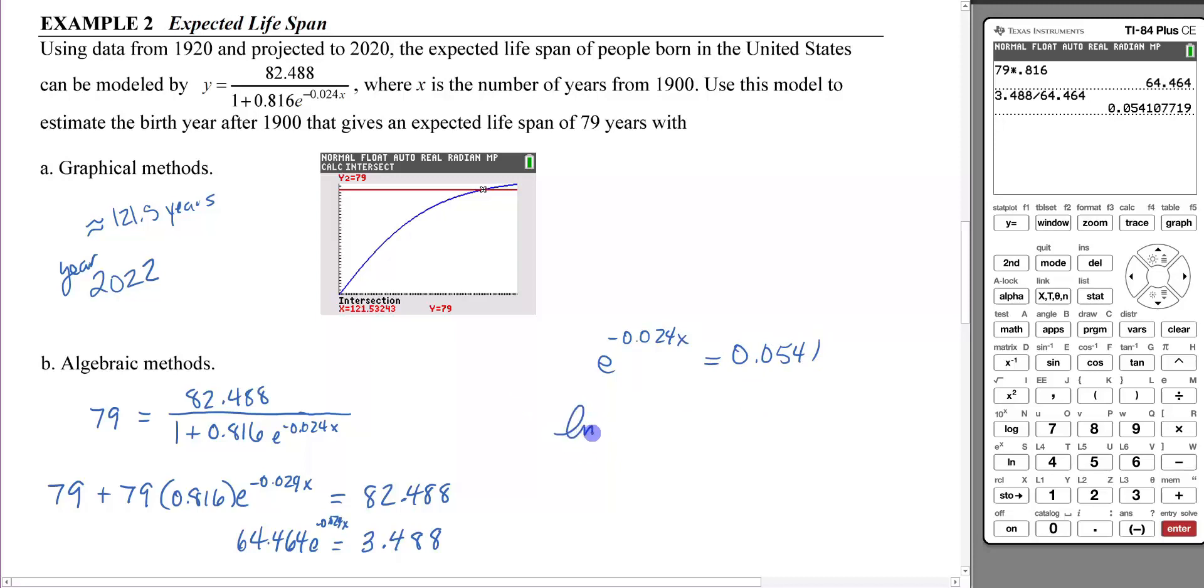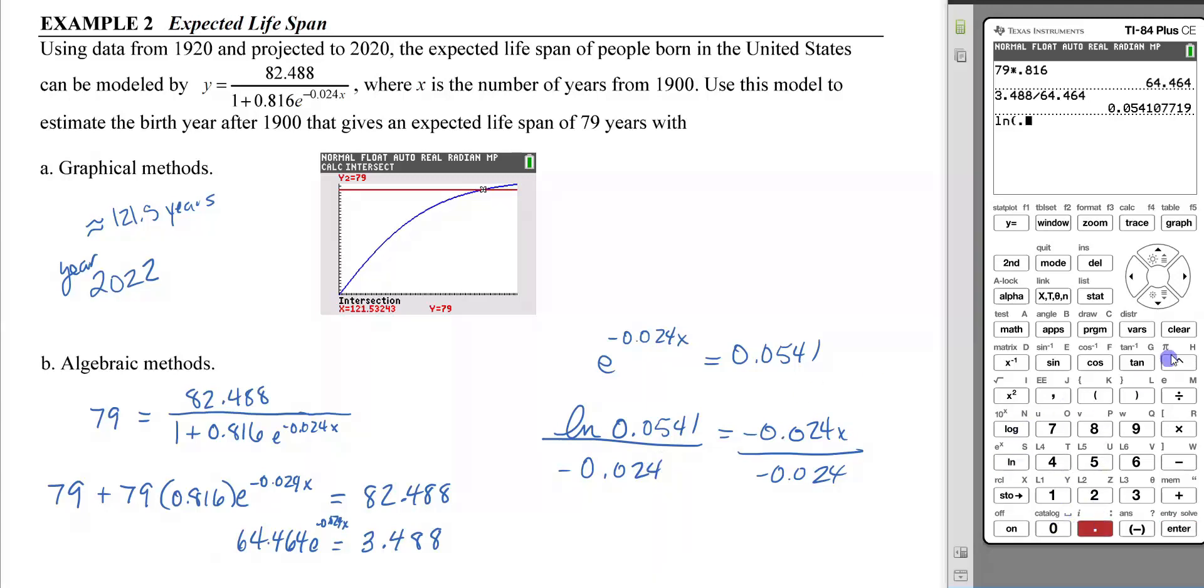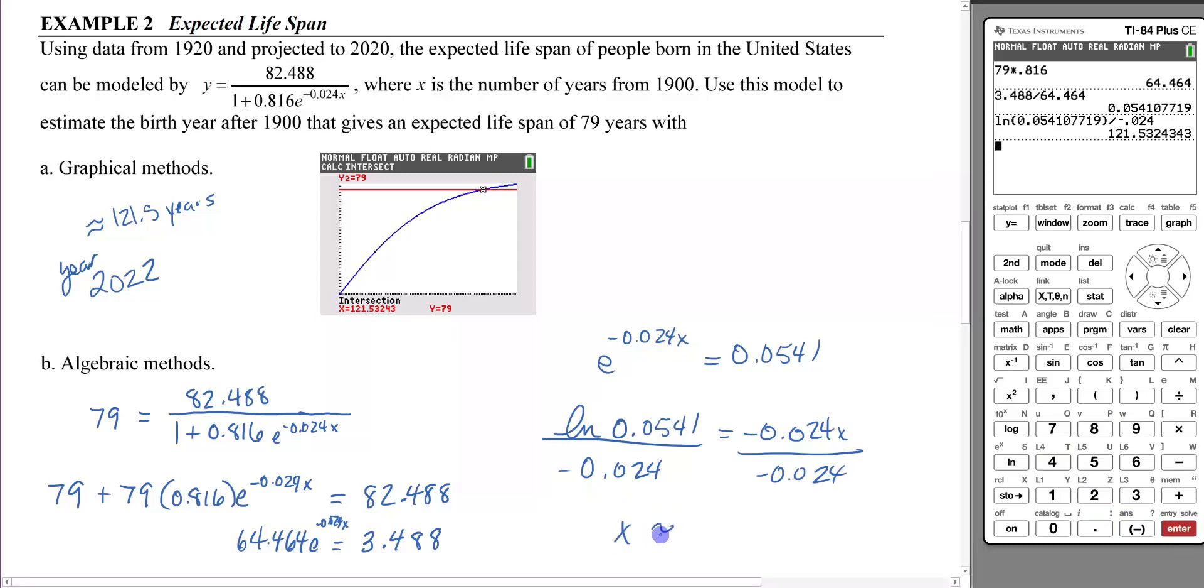Now we're ready to put this into natural log form. The last thing to do is divide both sides by -0.024. Put that into the calculator: natural log of 0.0541 divided by -0.024 gives us about 121.5 years. That's the year 2022.